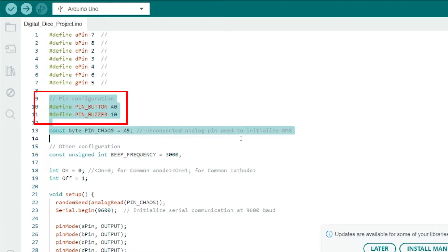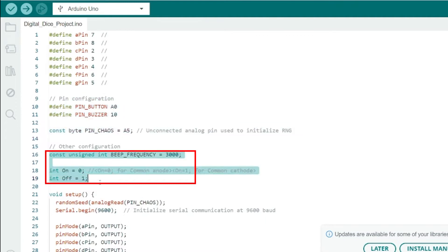We also have an unconnected analog pin used to initialize the random number generator. We set the frequency for the buzzer and defined variables to manage the display time. Here on and off will help us control whether segments are lit for a common anode or common cathode display.